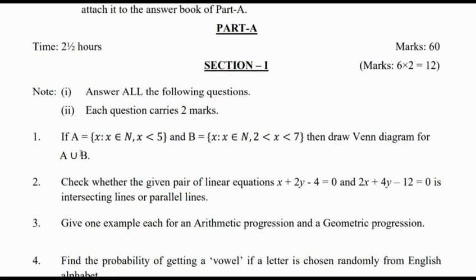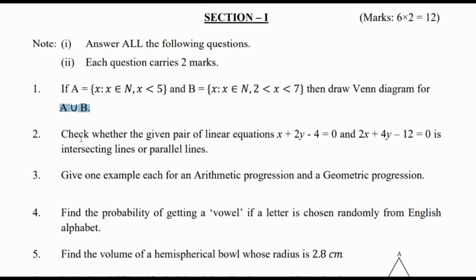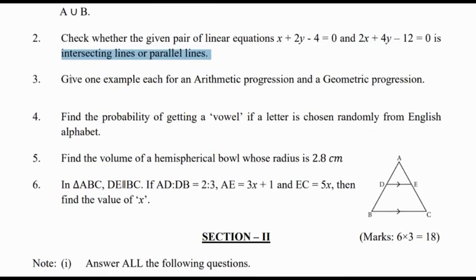Section 1, Question 1: Sets A and B are given in roster form and we have to draw the Venn diagram for A union B. Question 2: Check the pair of linear equations whether they are intersecting or parallel lines using the condition. Question 3: Give one example each for an arithmetic progression and a geometric progression. Question 4: Find the probability of getting the letter O if a letter is chosen randomly from the English alphabet. Question 5: Find the volume of a spherical bowl whose radius is 2.8 cm. Question 6 is a question from similar triangles.